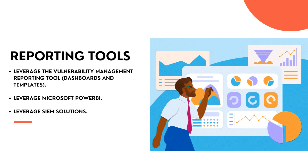Finally, reporting tools. Most vulnerability management tools have reporting templates you can leverage. Some of the KPIs mentioned are included in those templates, while others you may need to create manually. This is important when performing tool selection — ask as many questions as possible about reporting capabilities. Can the tool provider deliver this type of report? When running your proof of concepts, this is where you can ask those reporting questions.